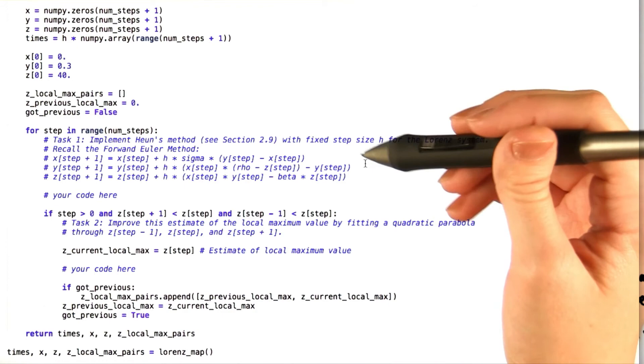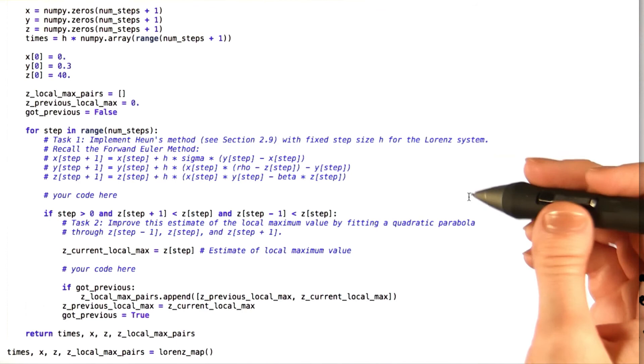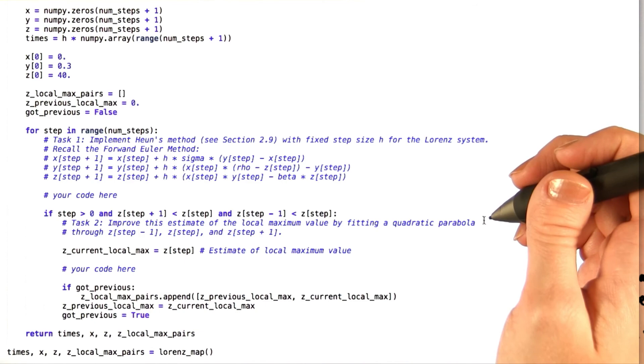So again, just to be clear, use Hoyne's method with non-variable step size to figure out how x, y, and z are going to change with each time step. Once you do this, you're going to use the parabola fitting method that I just discussed to figure out better where the local maxima are. Once you've done that, you're going to enter your estimate of the local maximum value. This should be a fun look into chaos theory. Good luck.